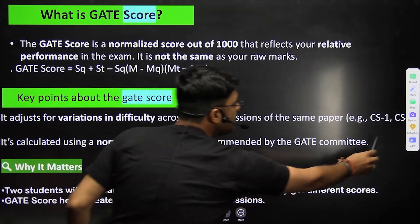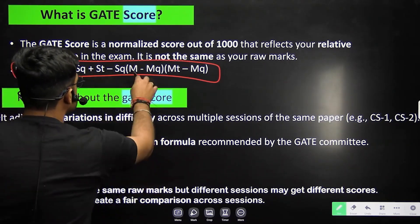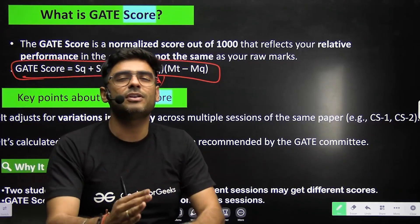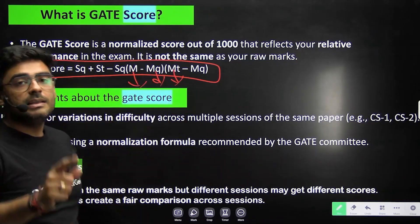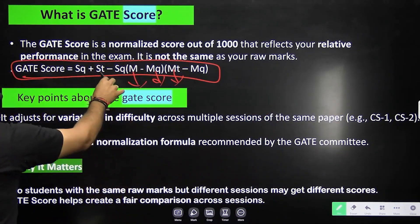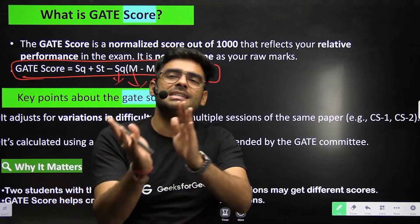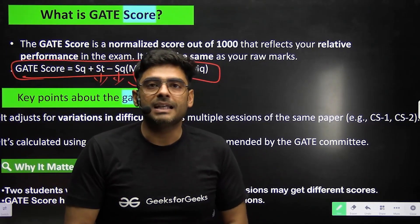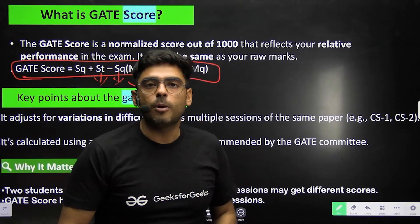This is the formula which GATE uses to calculate the GATE score. M is the raw marks you have obtained. MQ is the qualifying marks which GATE sets — for example, 31, 32, or 33 for CS branch, and that changes every year. MT is the mean or average of the top 10 rankers. SQ is the score set by GATE for a student who has just qualified — for example, 300 or 350. ST is the score given to the top ranker, such as rank 1.